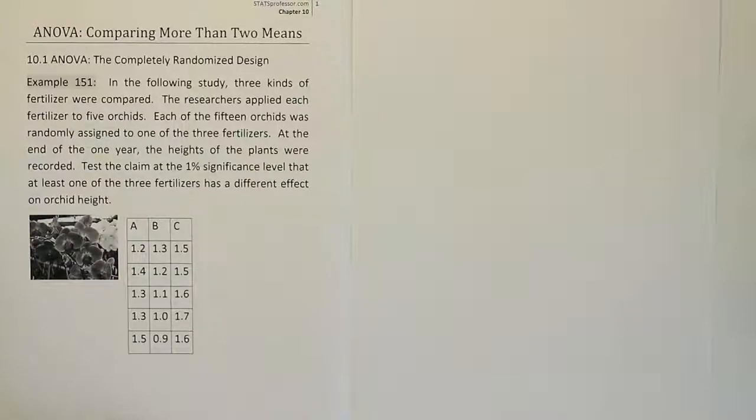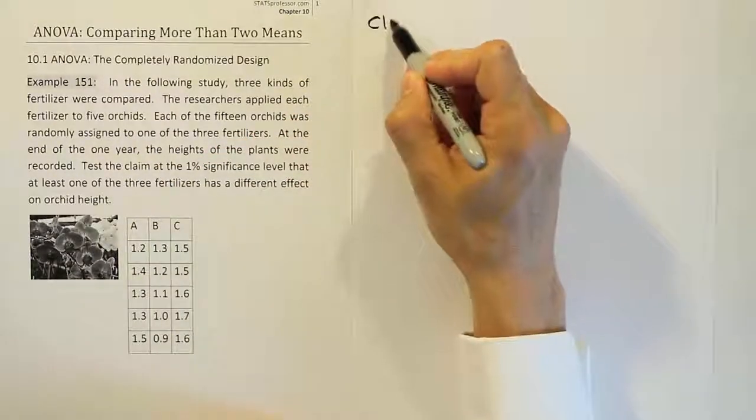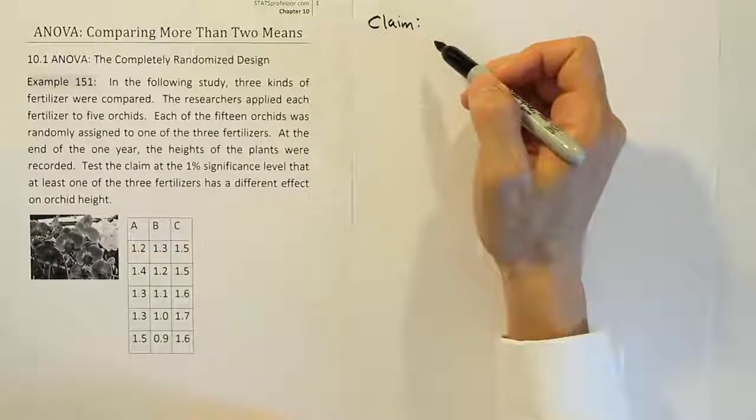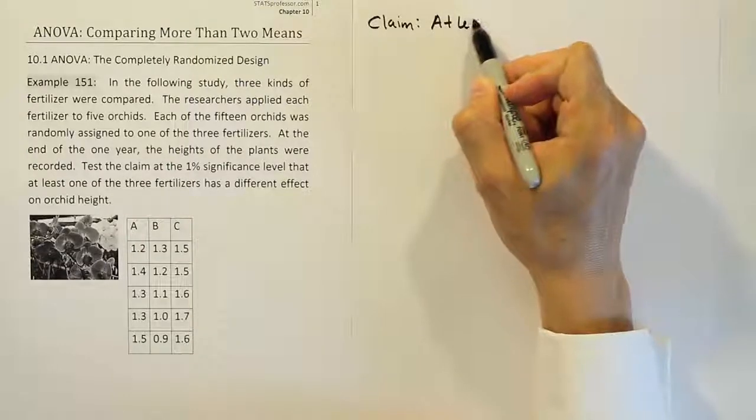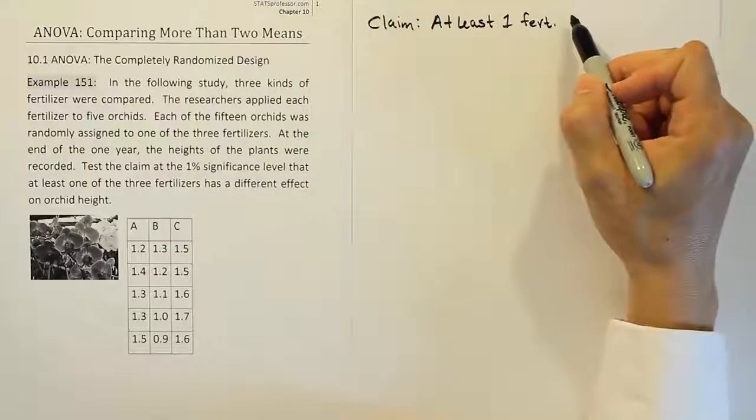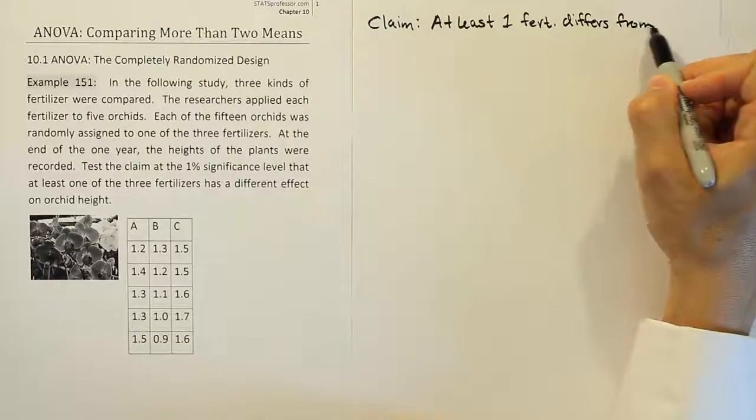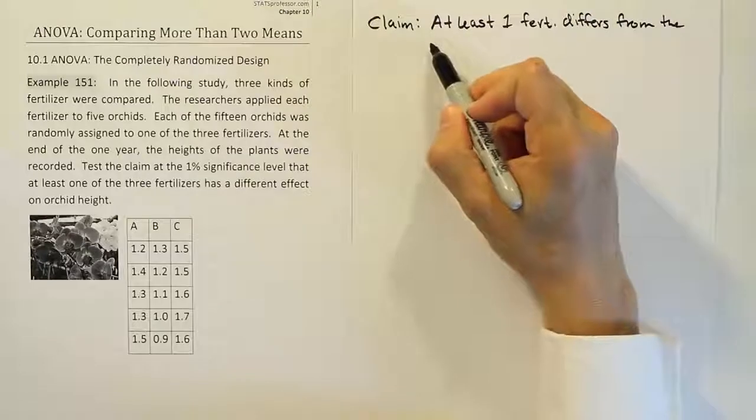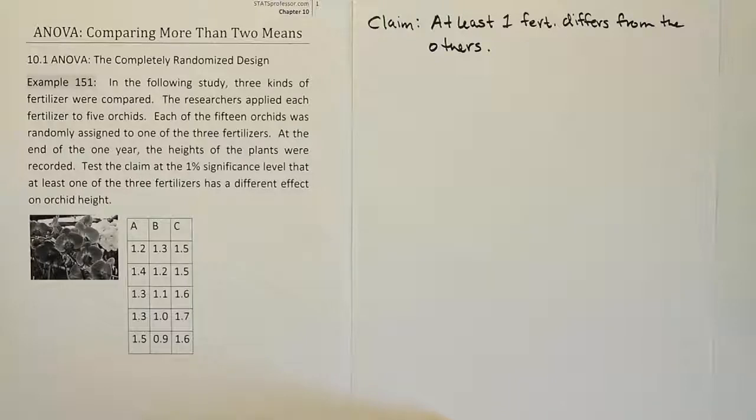Okay, so from there, we're going to apply the methods that we use to test the hypothesis using the ANOVA procedure. So as always, we have basically seven steps. We're going to have a claim. So let's begin with that. So it says test the claim. And our claim is going to be that at least one of the fertilizers has a different effect on orchid height, right? So at least one fertilizer differs from the others. Okay, that's good enough.